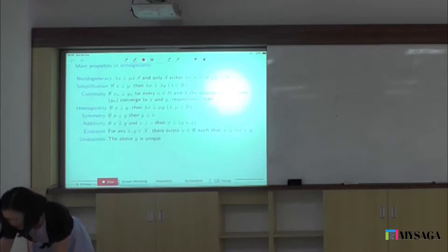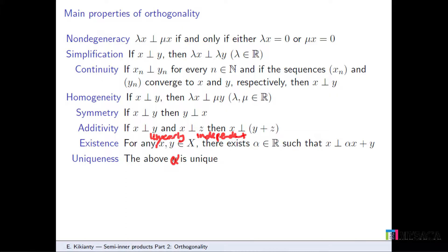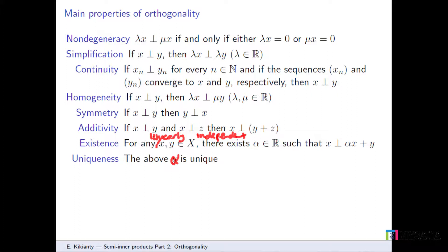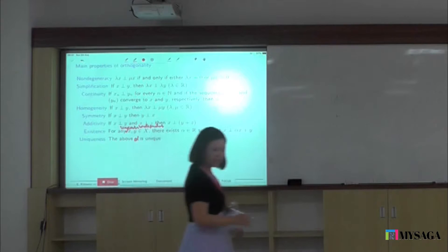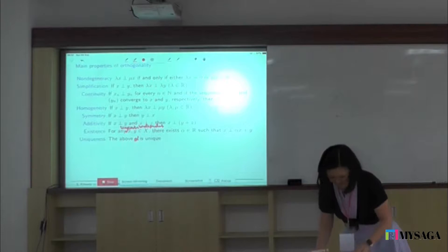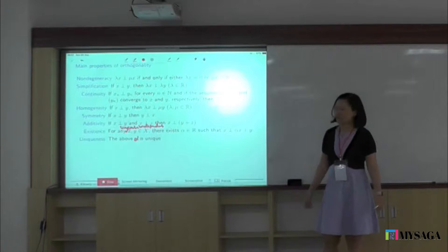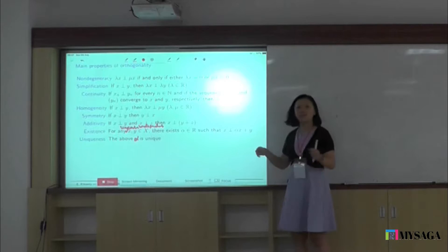X and y must be linearly independent. And uniqueness as well. So, when people start introducing some notion of orthogonality, you go check this list and see what properties you want from your orthogonality — maybe you want symmetry, maybe you want additivity. Introduce something, check, and see how good the definition is.